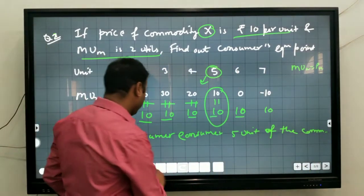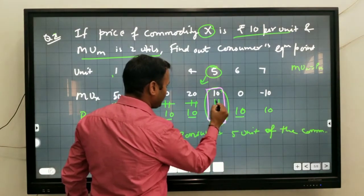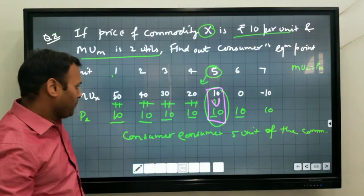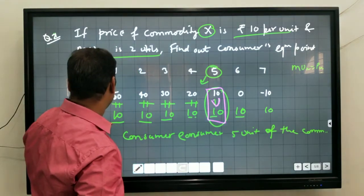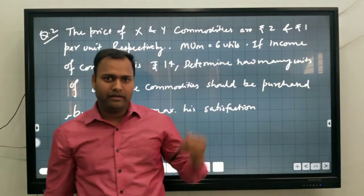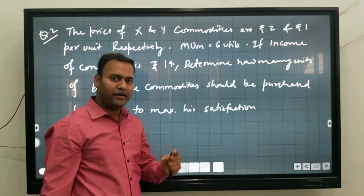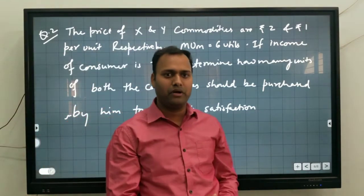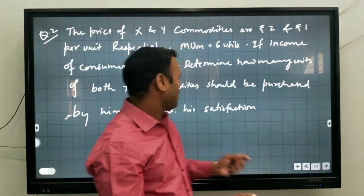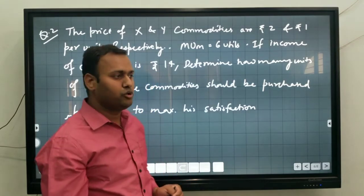The consumer consumes 5 units because MUX equals PX at that point — where 10 equals 10. So this is one problem involving TU and MU. In the previous two questions, only one commodity was given. In the first question, TU was given so we calculated MU. In the second question, MU was directly given so we simply applied the formula MUX equals PX to get consumer equilibrium.